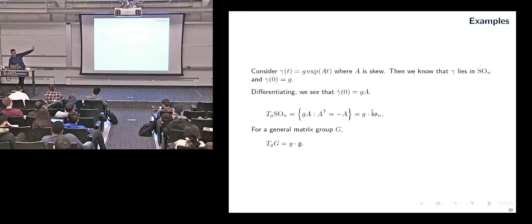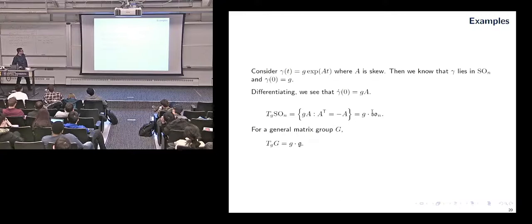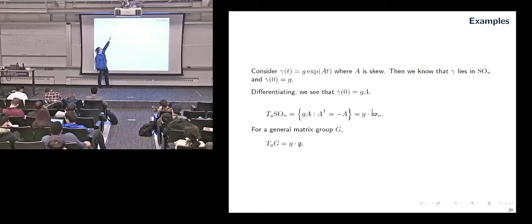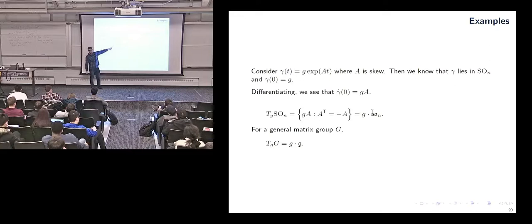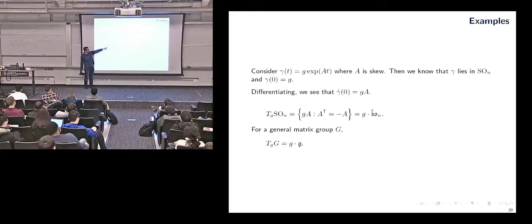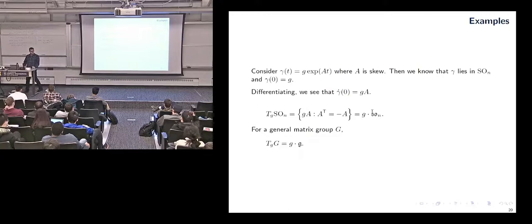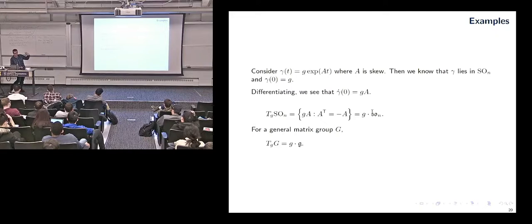That was all the algebras — what happens when you differentiate at the identity. But if you differentiate not at the identity: if you have the curve e^(At), at zero it's the identity and the derivative gives A. If you put a G in front — G·e^(At) — at zero this curve is at G, and the derivative at zero is just G times A. So if you're working not at the identity, all that happens is you pre-multiply everything by G. So if you know what's happening at the identity, you automatically know what's going on everywhere.